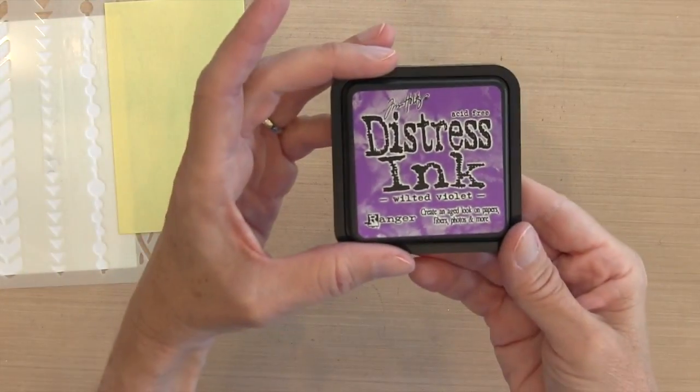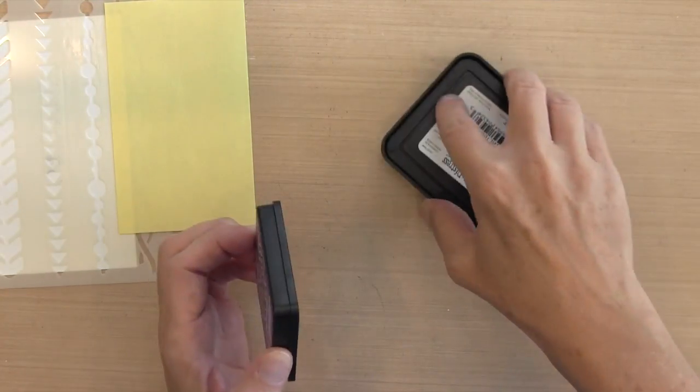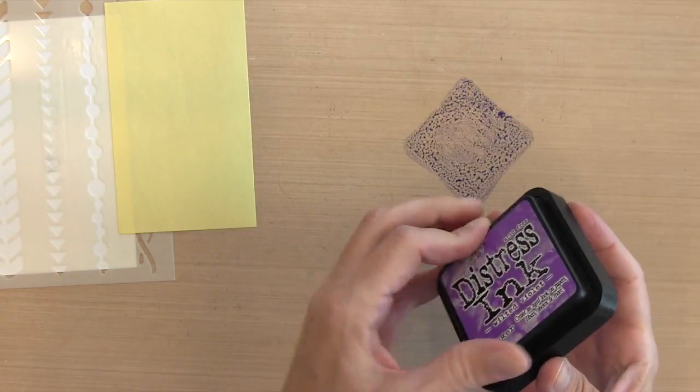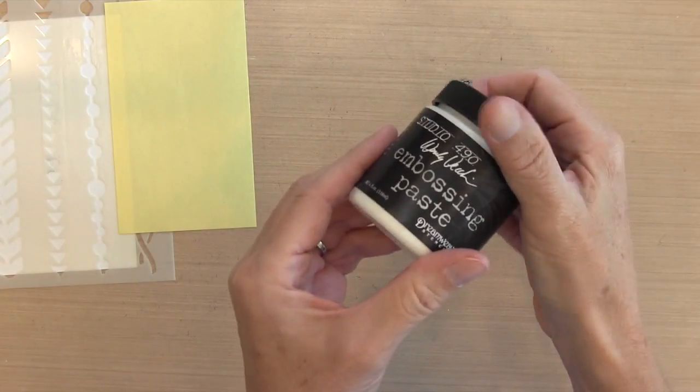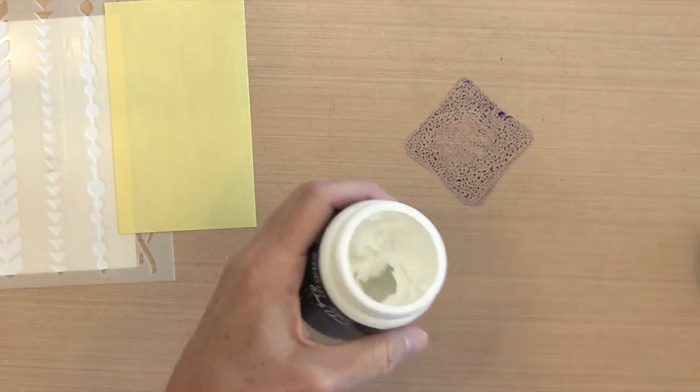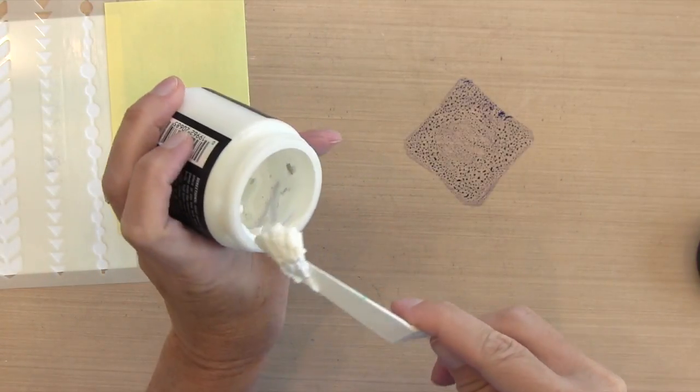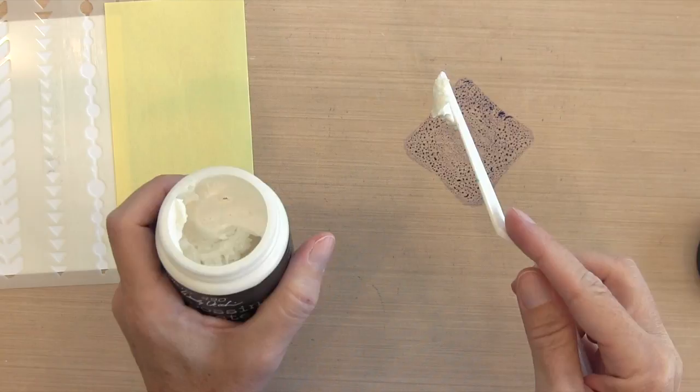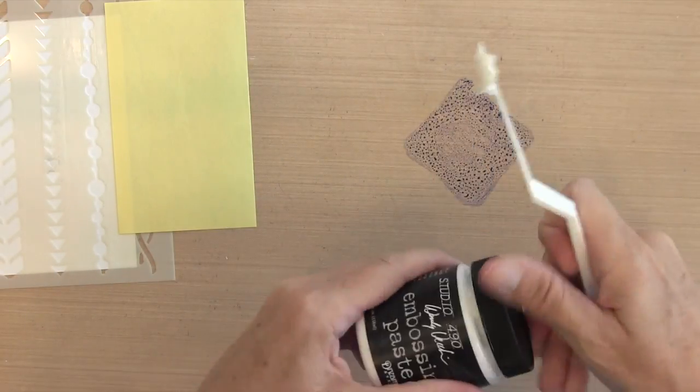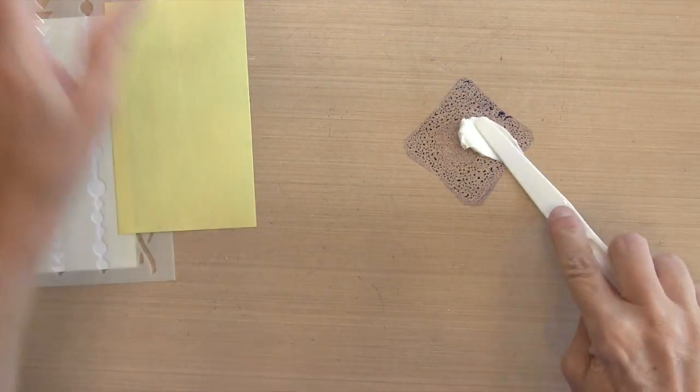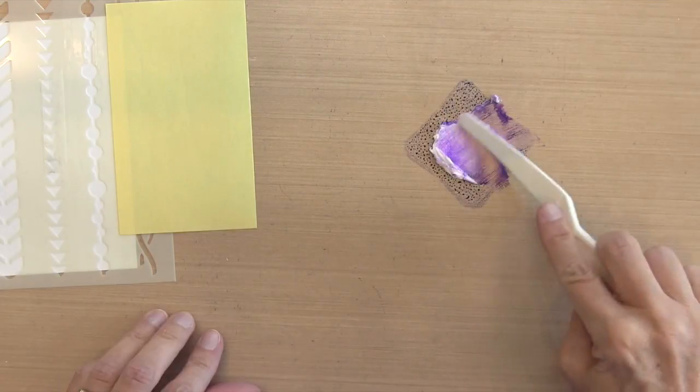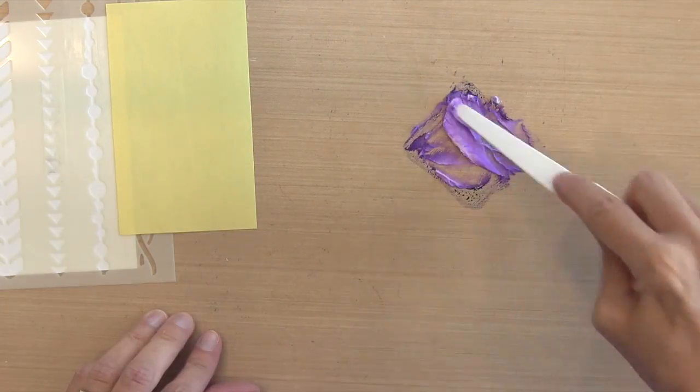I'm going to use my distress inks to color my embossing paste. This is Wilted Violet. I'm just going to put a bunch on my craft mat and then I'll grab my palette knife and pick up maybe three-quarters of a teaspoon, maybe even just a half a teaspoon. There's really not that much because the border is pretty small. I'm just going to kind of mush it in there and just keep picking it up and working on it until I have everything completely mixed.